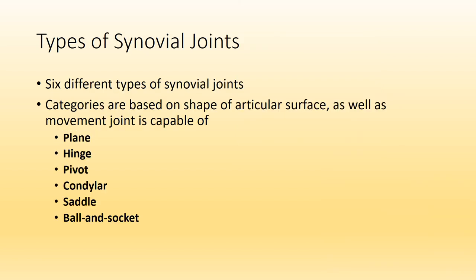In the last portion of this lecture, we will talk about the six different types of synovial joints, as well as provide examples for each — so you should know these for your exam. The six types are: plane joints, hinge, pivot, condylar, saddle, and ball and socket.